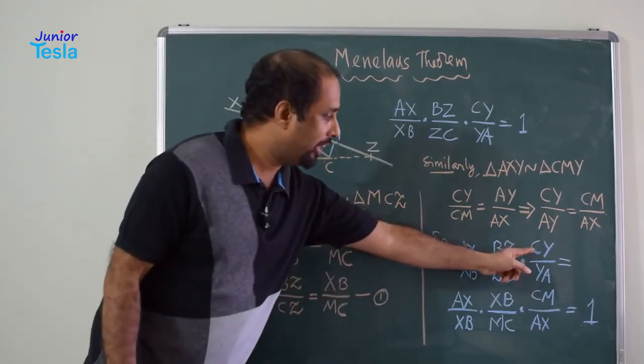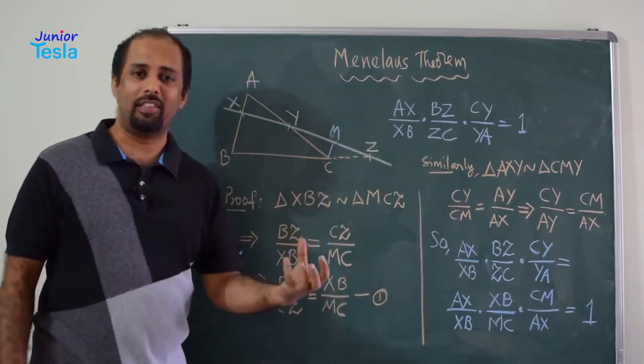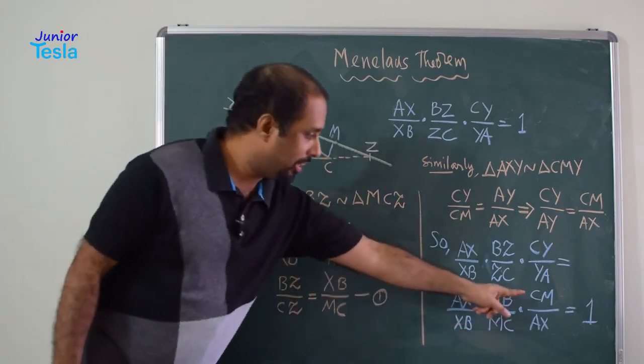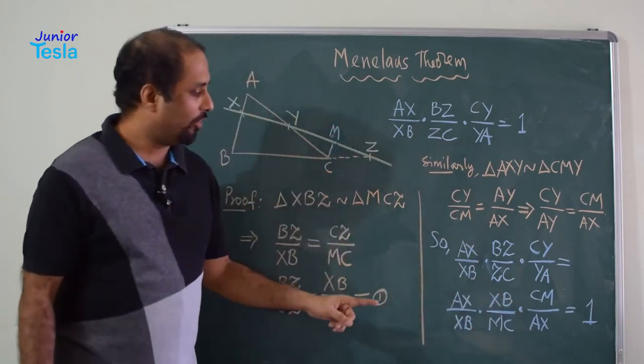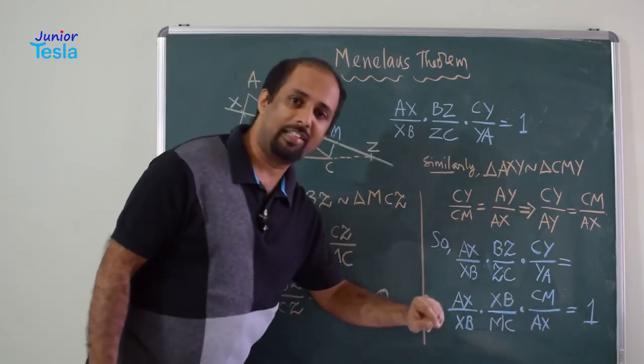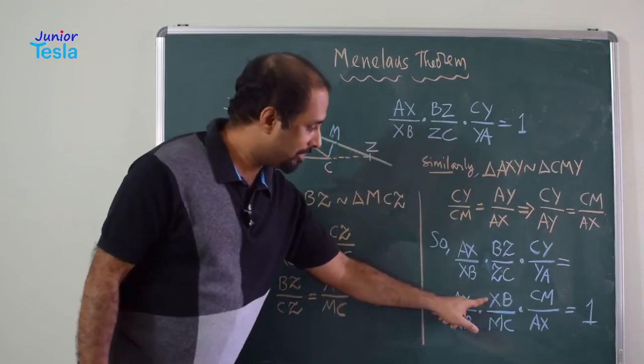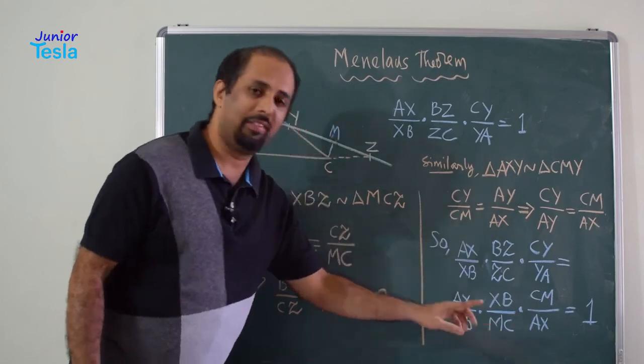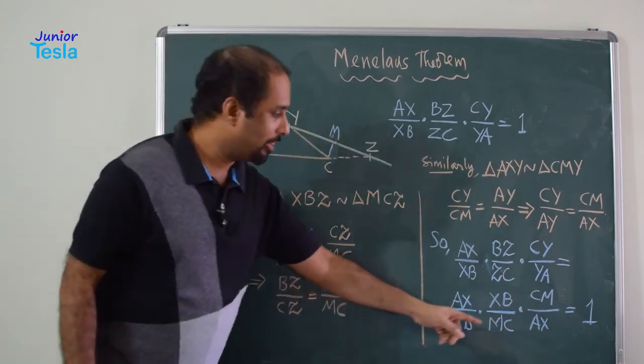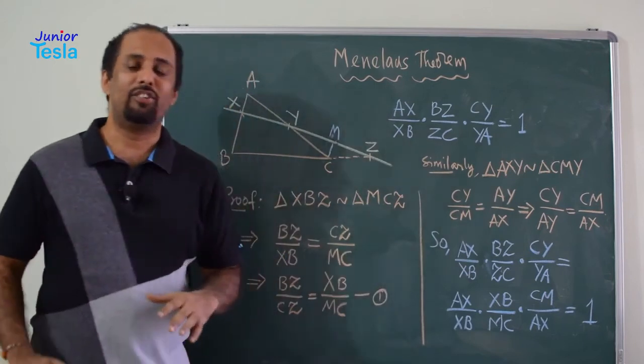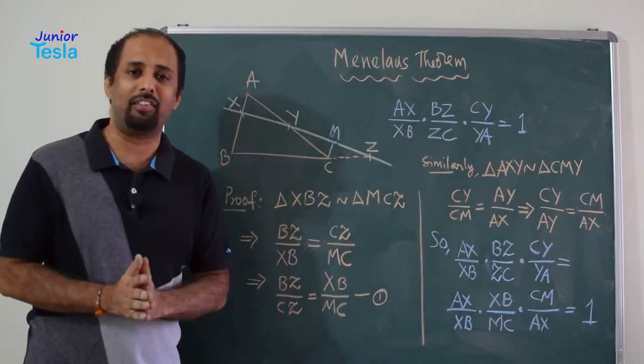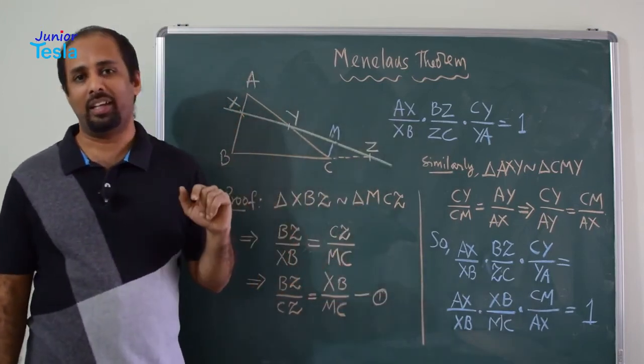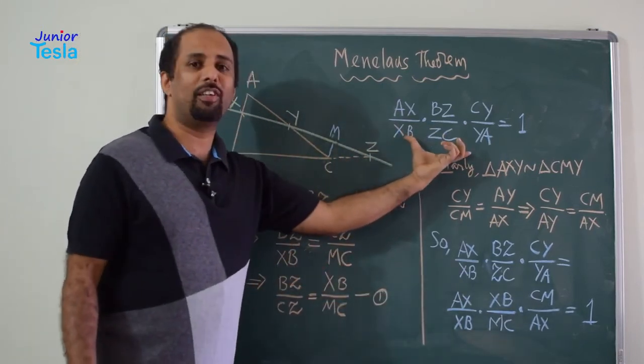Now, similarly, CY divided by YA. Now, this ratio is replaced by this CM divided by AX. So, CM by AX. Now, AX and AX, they get cancelled. Now, XB and XB, they get cancelled and CM and CM, CM or MC both are same because it is a length segment. So, CM and CM, they get cancelled. So, all the numerators and denominators got cancelled to each other. Finally, we are left with only 1. That is why this entire expression is equal to 1.